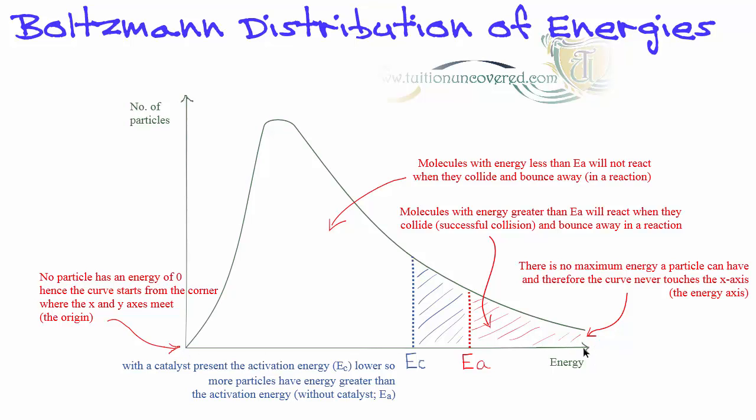The end of the curve never touches the x-axis, simply because there is no, theoretically, no particle with the maximum amount of energy. Every time you have a particle with the most energy for that sample, potentially it can get some more. So it never actually touches the x-axis. There is an overall chunk of particles with this range of energies, very few with a small amount of energy, a small amount of particles with a very large amount of energy.